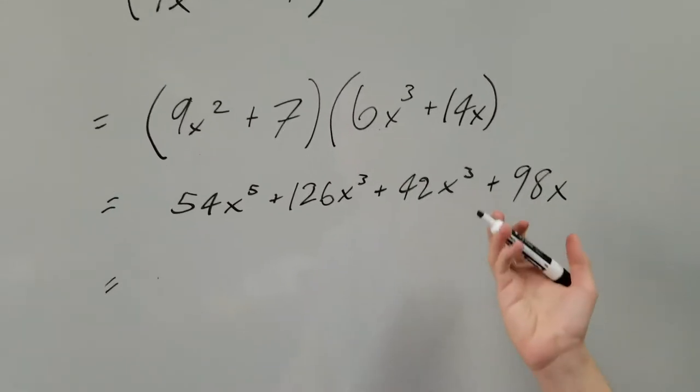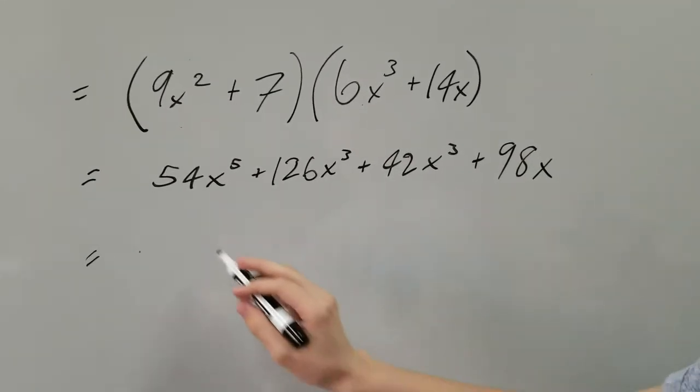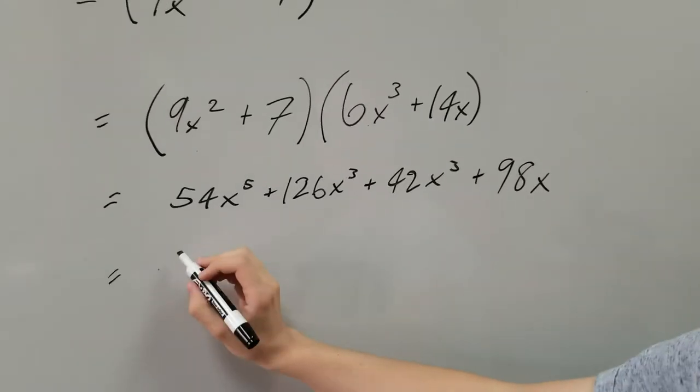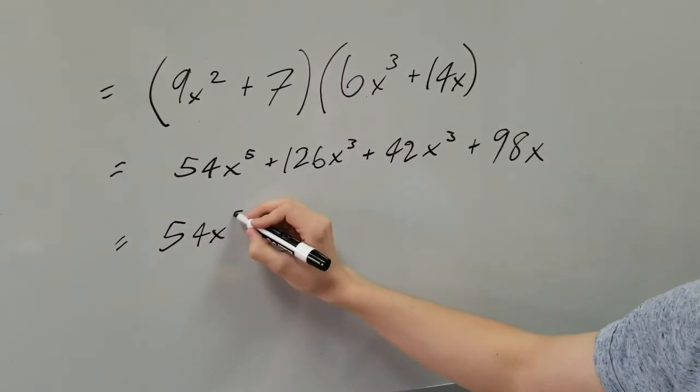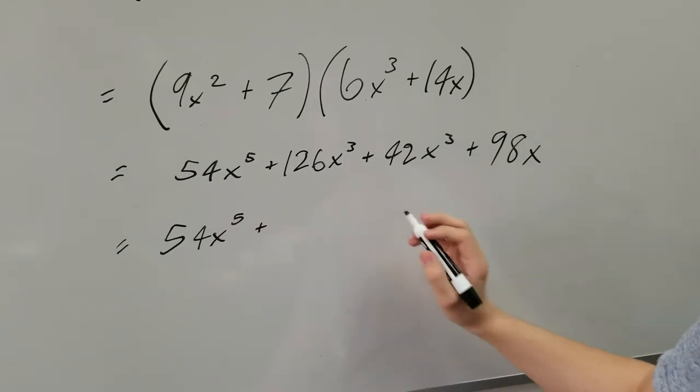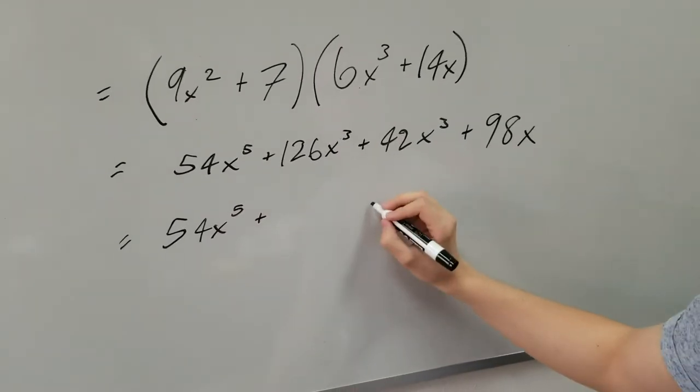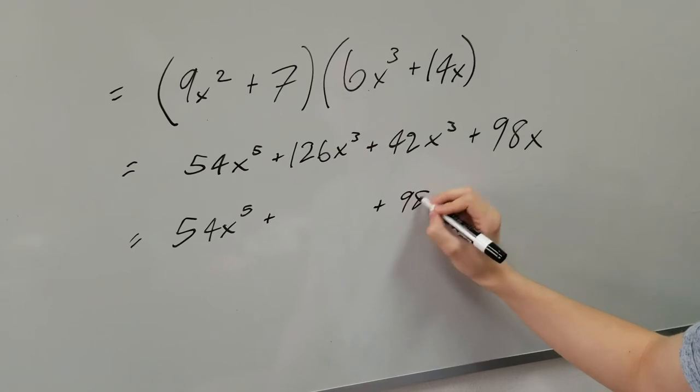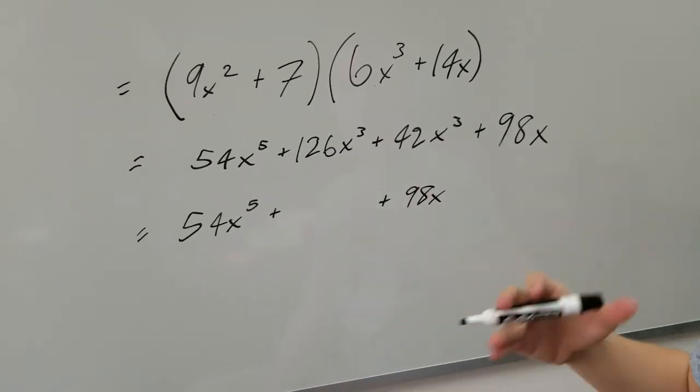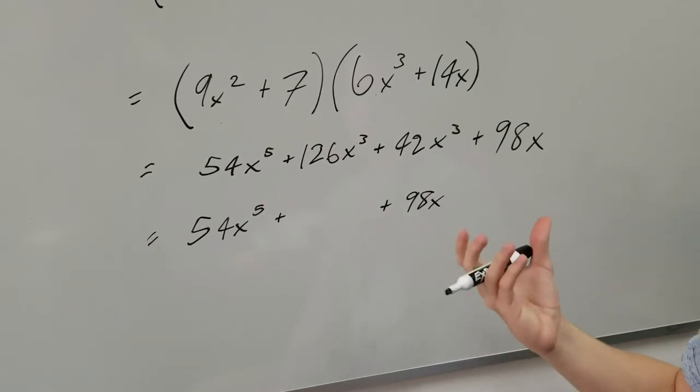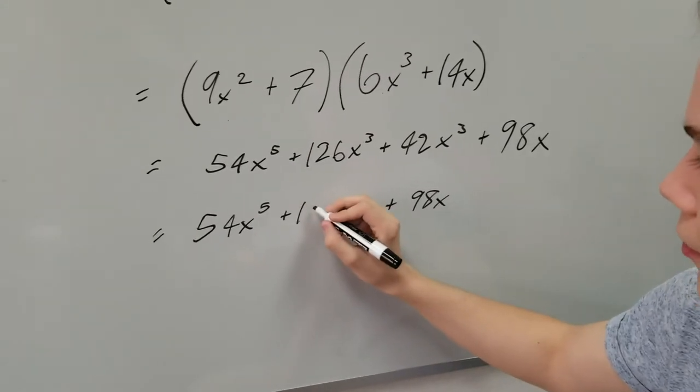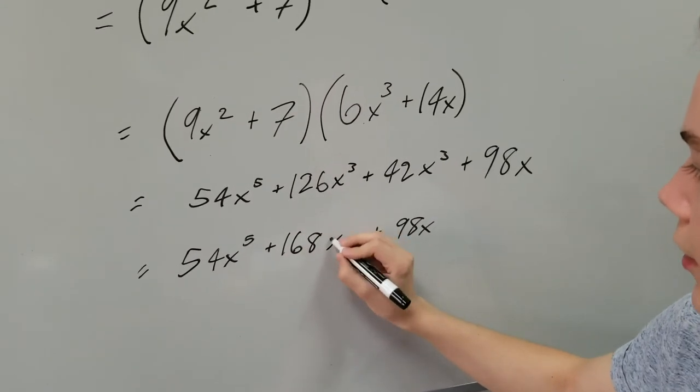Obviously, all that's left to do is to combine like terms. So, 54 can stay the same. 98x can stay the same. And all that we need to really do is combine 126x cubed and 42x cubed. So, I have 98x over here at the end. So, 42 plus 126 is 168. 168x cubed.